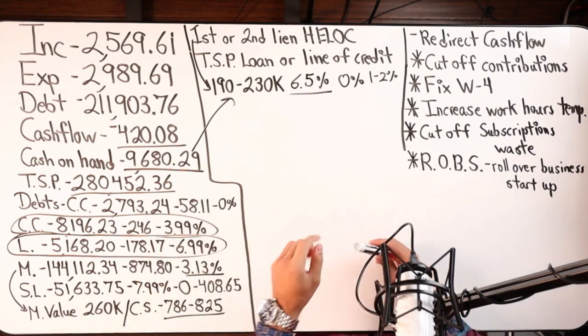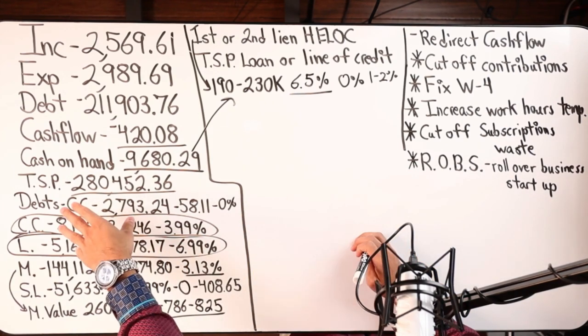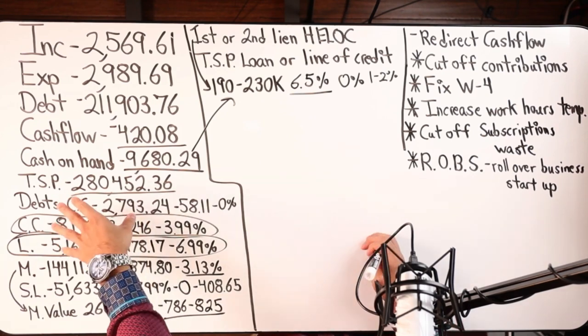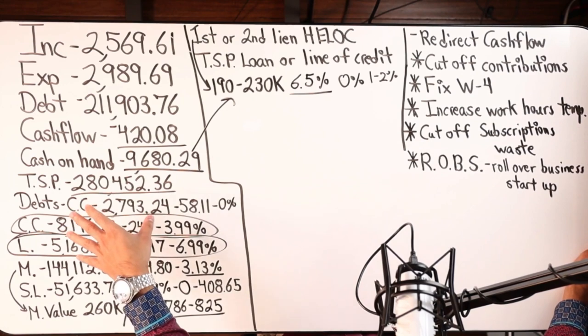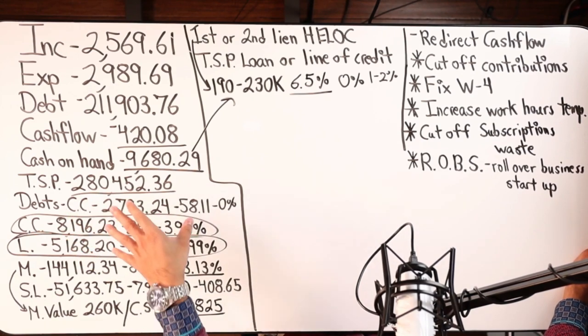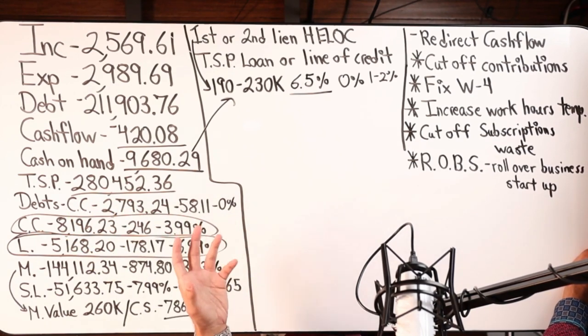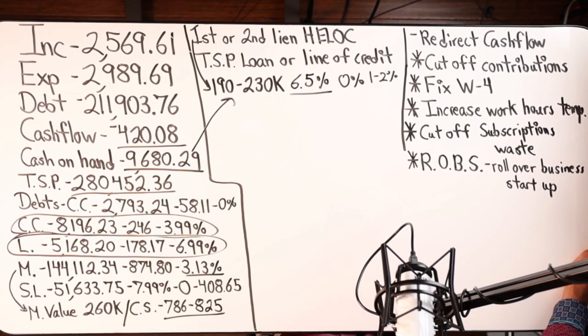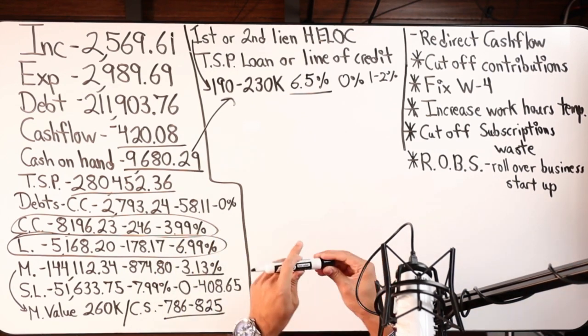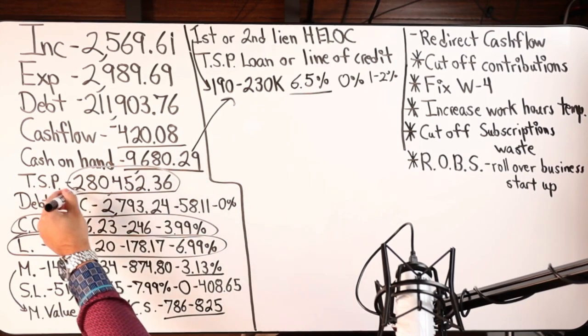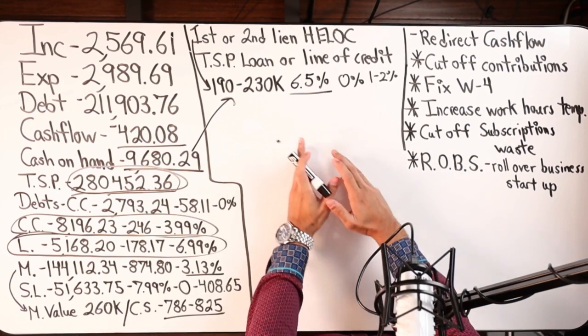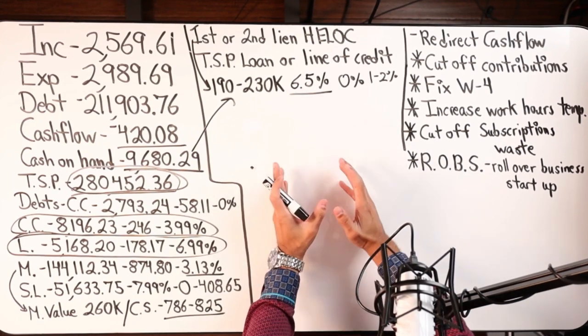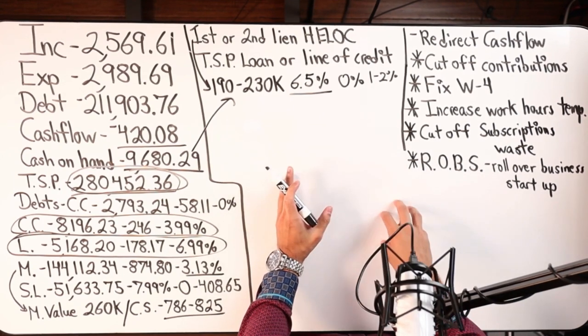If they don't go the first lien HELOC route, we could potentially get what's called a securities backed line of credit or an asset backed line of credit. That's usually the terms that they use, might also use the term margin account, where they would take a portion of this asset that you have and they would put it in a margin loan.